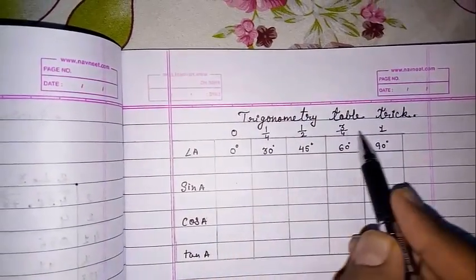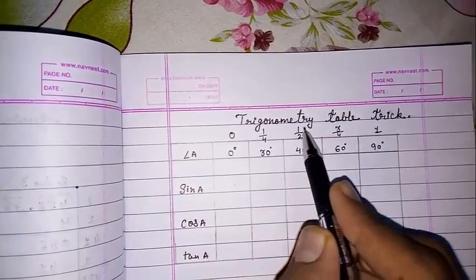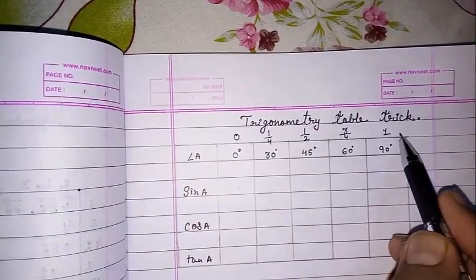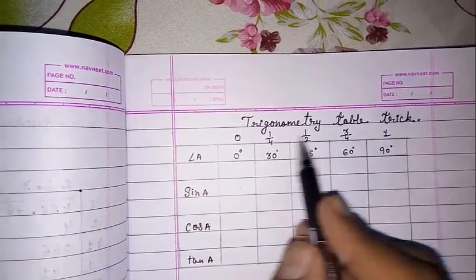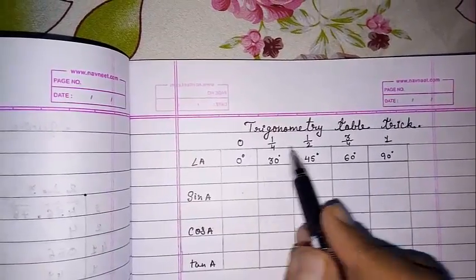This is the way. First you have to remember: 0, 1 by 4, 1 by 2, 3 by 4, and 1. Easily we can see that there is a gap of 1 by 4 in all the numbers.